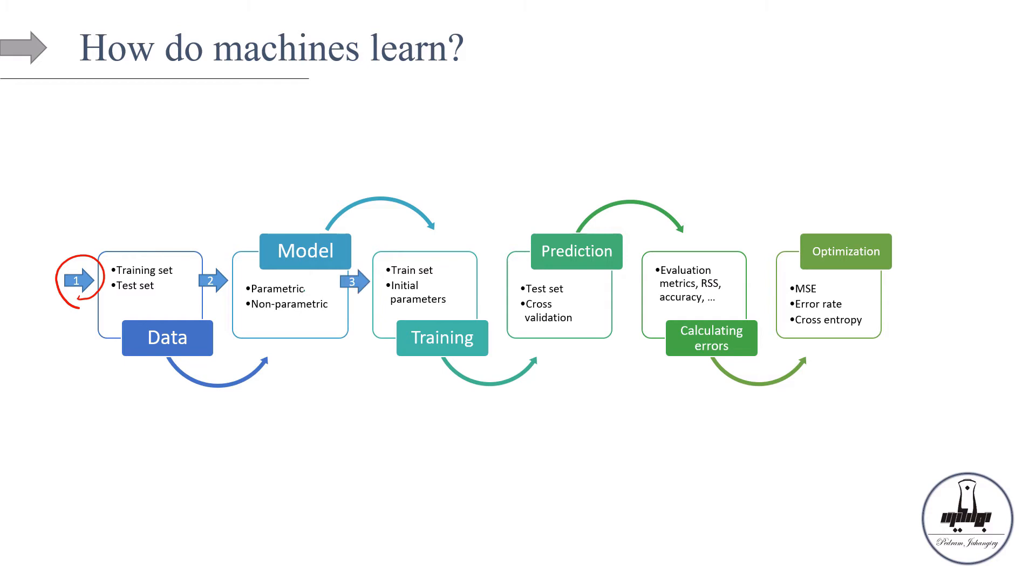Then the next step is to train the model. For training the model, we need to use the train set and we can start by some initial values for the parameters and hyperparameters of the model, if the model has any hyperparameters. Then the next is using the model and those initial values for parameters. We will make some predictions in the test set as well as for the cross-validation set.